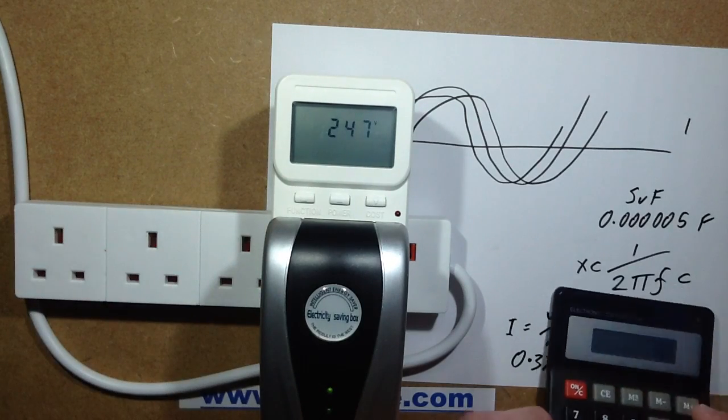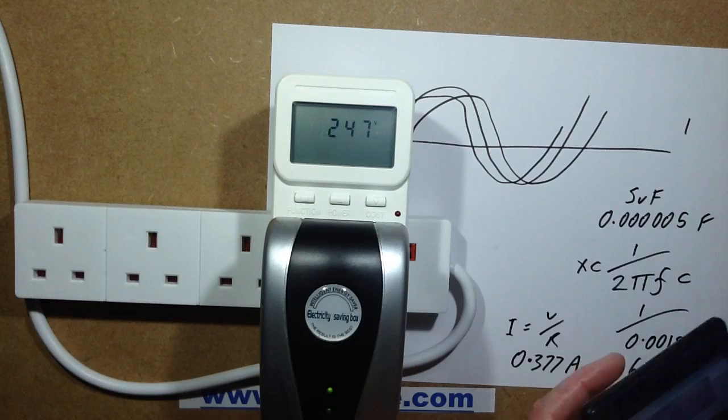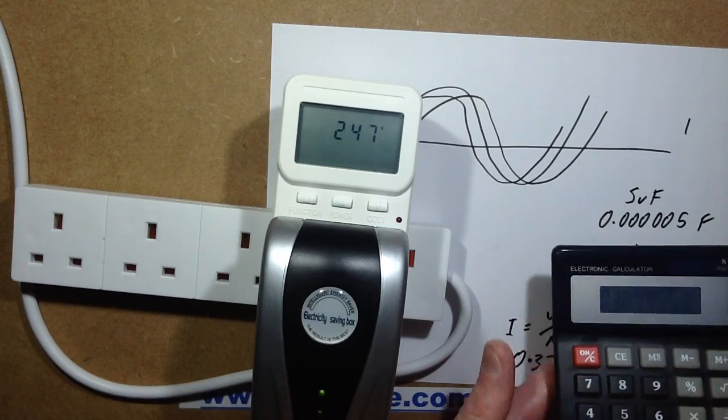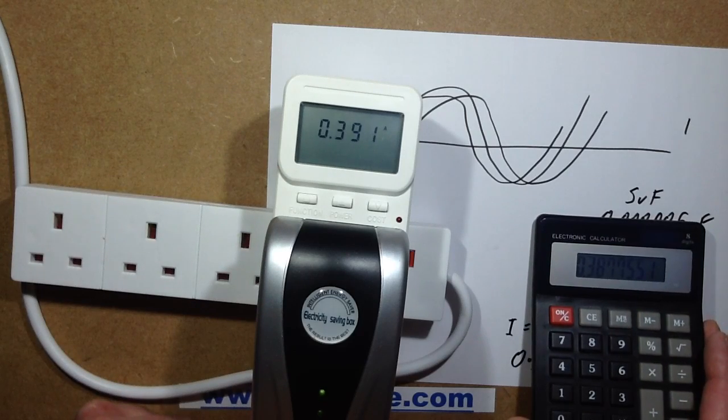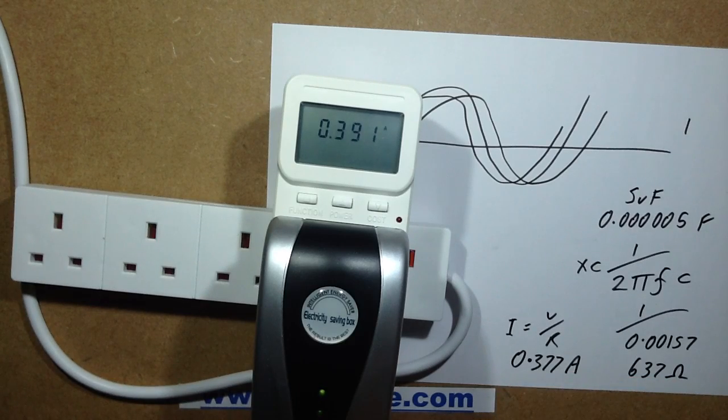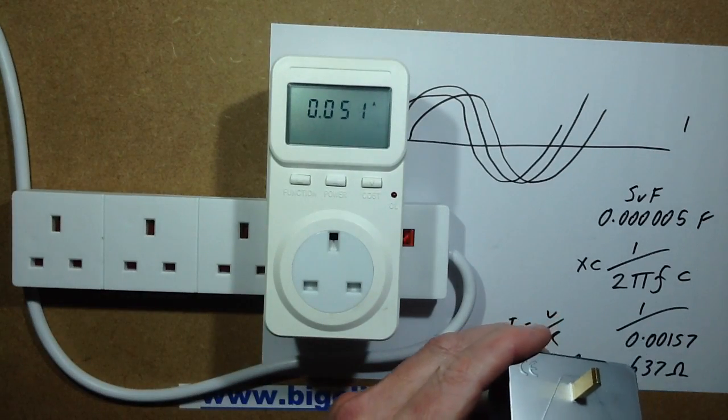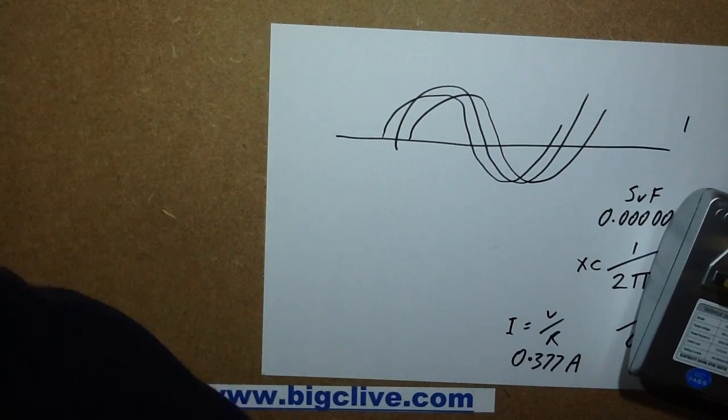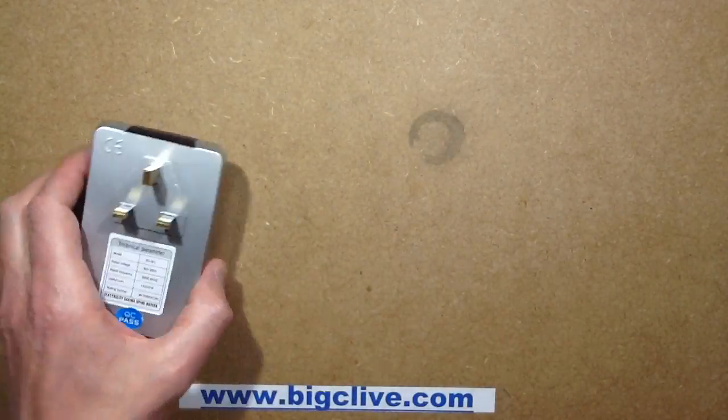Let's do the maths again. 247 divided by 637 ohms equals 387 milliamps. What was I getting? 391. That's really close, isn't it? Just 4 milliamps off. That's incredibly accurate. That's nice, I like it when stuff like that comes. I'll just unplug this again. Yes, a wee spark there, that's why I got a nip. That was intriguing. I quite enjoyed that little bit of maths there, even though it is boring as shit to everybody else. Anyway, let's open this up.